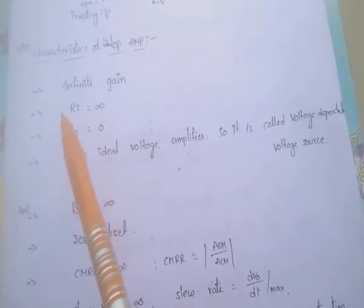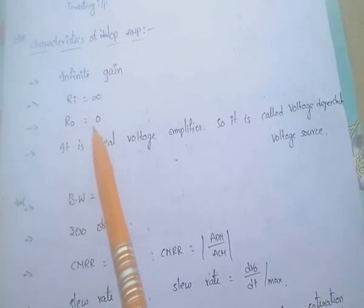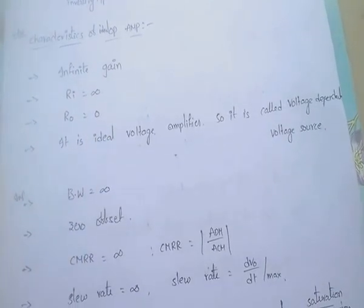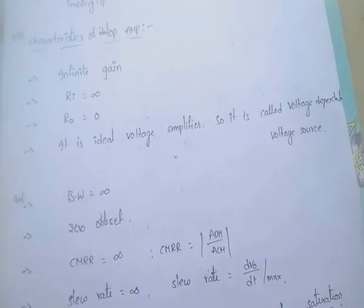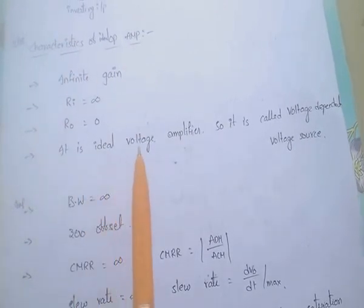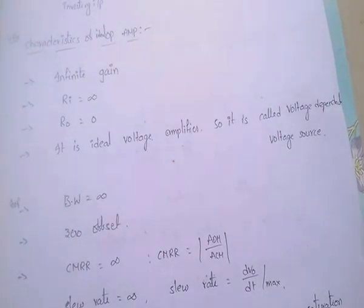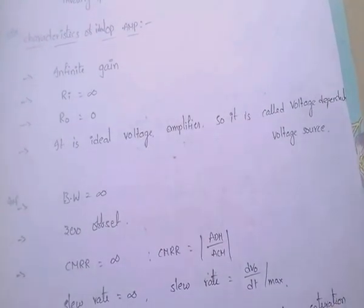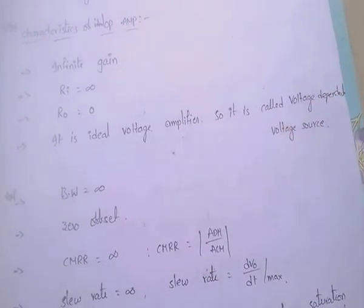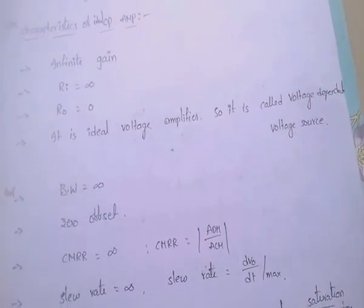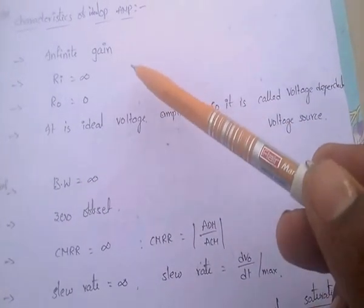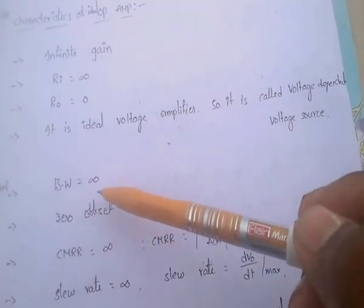The first characteristic is infinite gain. Input resistance or impedance is infinite. Output resistance must be zero. And this op-amp is an ideal voltage amplifier, so it is called a voltage dependent voltage source. The bandwidth of this ideal op-amp is infinite.